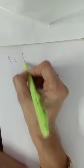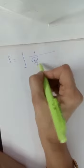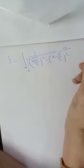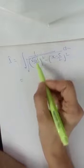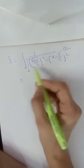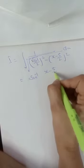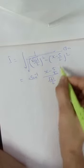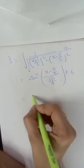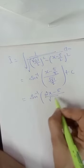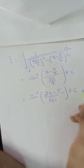Therefore I = ∫1/√((√61/2)² - (x - 5/2)²) dx. Applying the formula ∫1/√(a² - x²) dx = sin⁻¹(x/a) + c, the answer is sin⁻¹((2x - 5)/√61) + c.